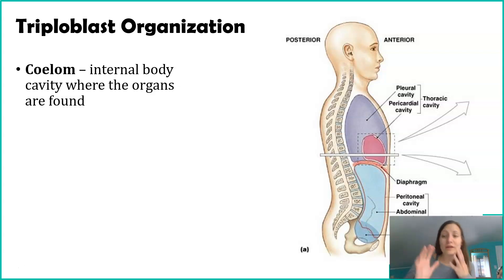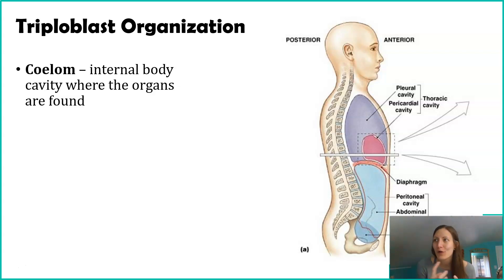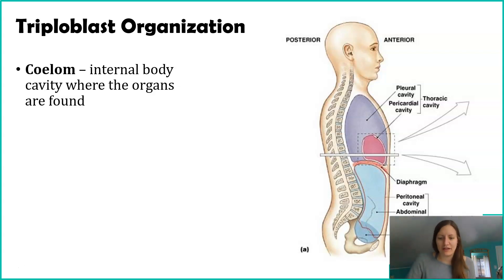This is only possible because we have a mesoderm. Diploblasts don't have a coelom because there's no mesoderm to enable the ability for a coelom to form.